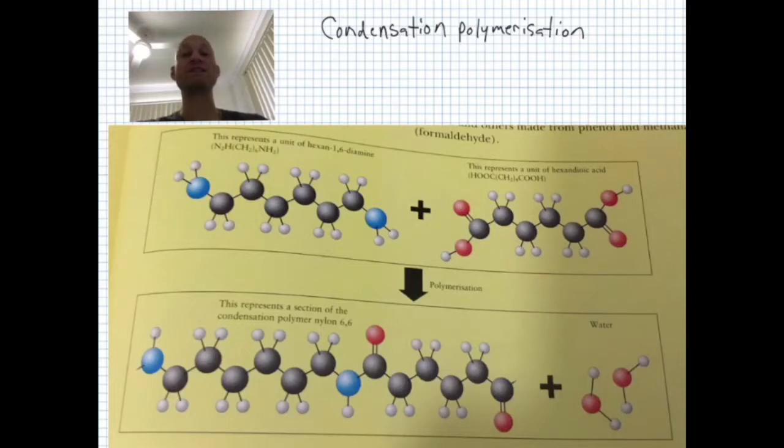In this process, each stage in the polymer chain forms as a water molecule is expelled. It's the expulsion of water that gives this form of polymerization its name. A much wider range of polymers can be made from condensation polymerization than from addition polymerization.